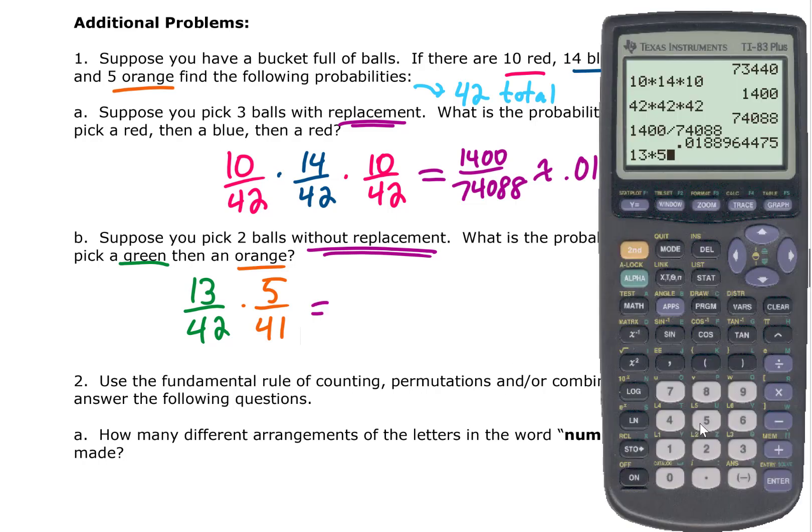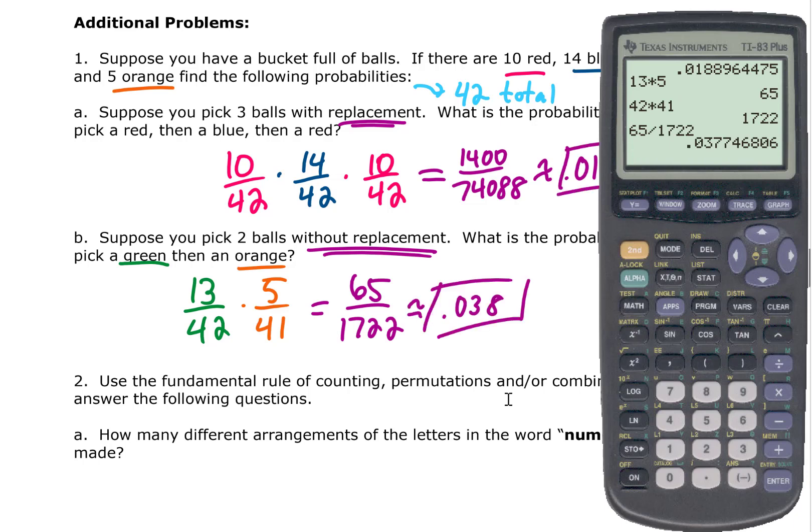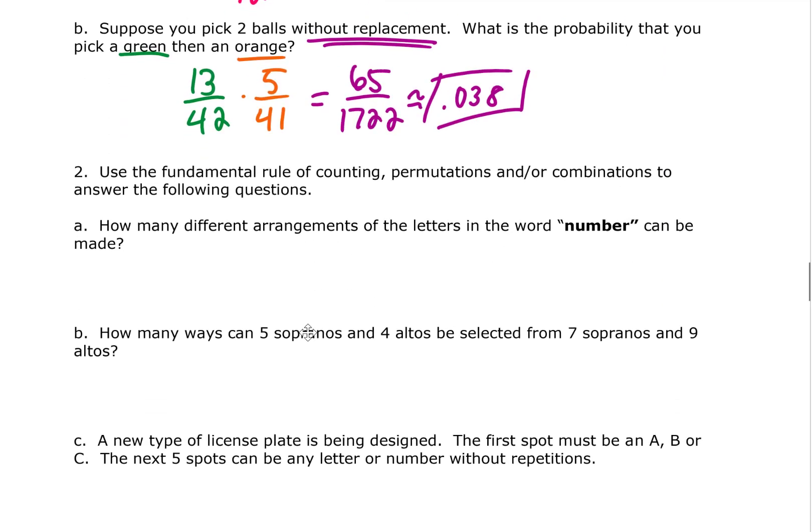If we want to multiply that out, we can do the numerator first. 13 times 5 is 65 and 42 times 41 is 1722. If we want a decimal here, the calculator is giving us 0.038 as our answer. That corresponds to about a 3.8% chance.